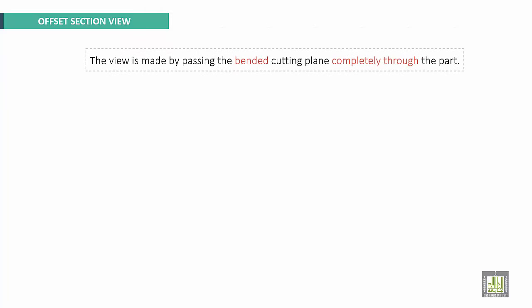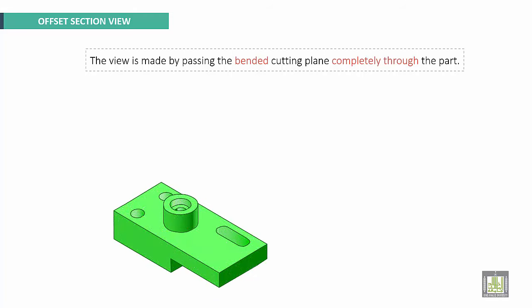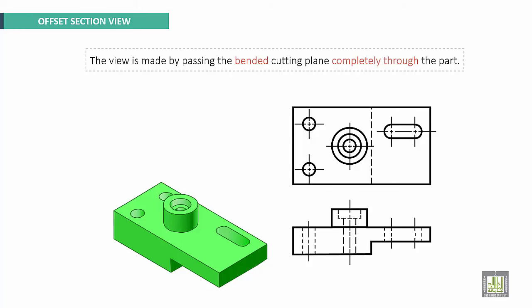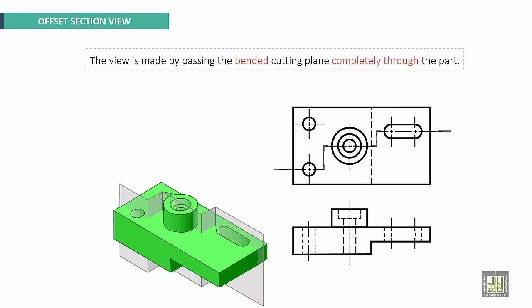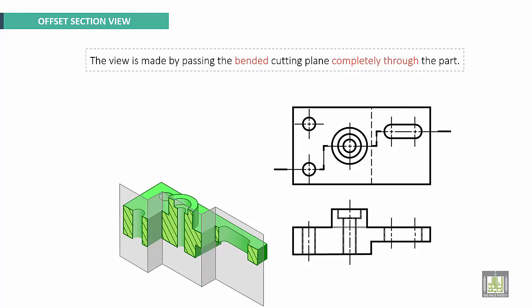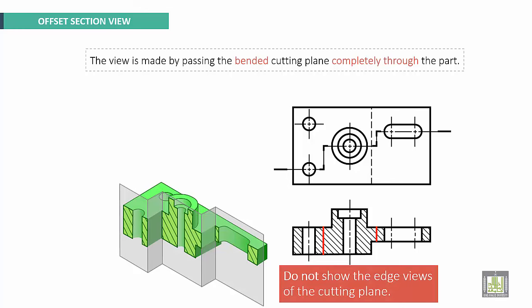Offset Section View: this view is made by passing the banded cutting plane completely through the part. Here we have an example. These are original views using dashed lines. This is the banded cutting plane — it passes through all the part and makes a section. Finally, we get the sectional view using dashed lines, also called hatching. These intersections with sections will not be represented here; do not show the edges of the cutting plane — these lines should not be shown and will be removed.